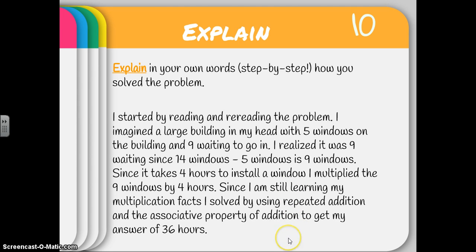So let's take a look at my explanation. I started by reading and rereading the problem, which we should do every time. I imagined a large building in my head with five windows on the building and nine waiting to go in. Remember, that was my stack of windows outside the building. I realized it was nine waiting, since 14 windows minus five windows is nine windows. Since it takes four hours to install a window, I multiplied the nine windows by four hours. Since I am still learning my multiplication facts, I solved by using repeated addition and the associative property of addition to get my answer of 36 hours. So now anyone who takes a look at my work and my explanation should know how I solved the problem.